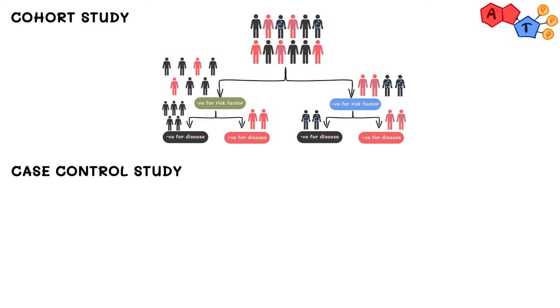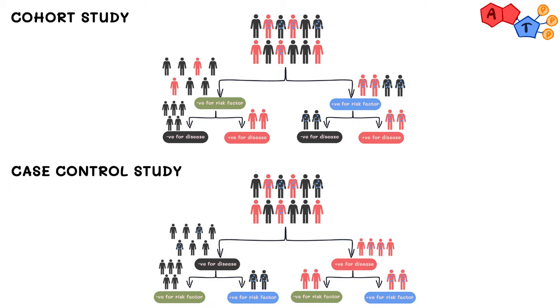Cohort studies first divide the groups based on risk factors, while case control studies first divide the groups based on disease status.